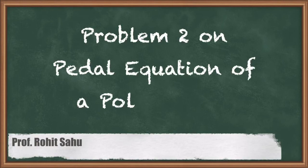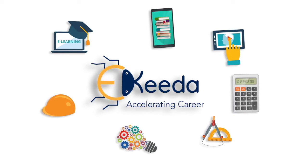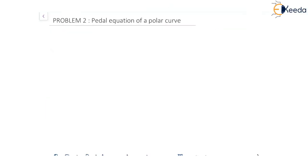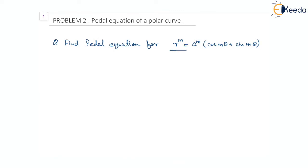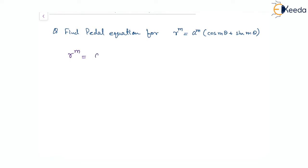Hello, in this session we will see another problem on the pedal equation of a polar curve. The equation is r to the power of m equal to a to the power of m times of cos(mθ) plus sin(mθ). So with this, let us take the polar curve r^m equal to a^m times cos(mθ) plus sin(mθ).